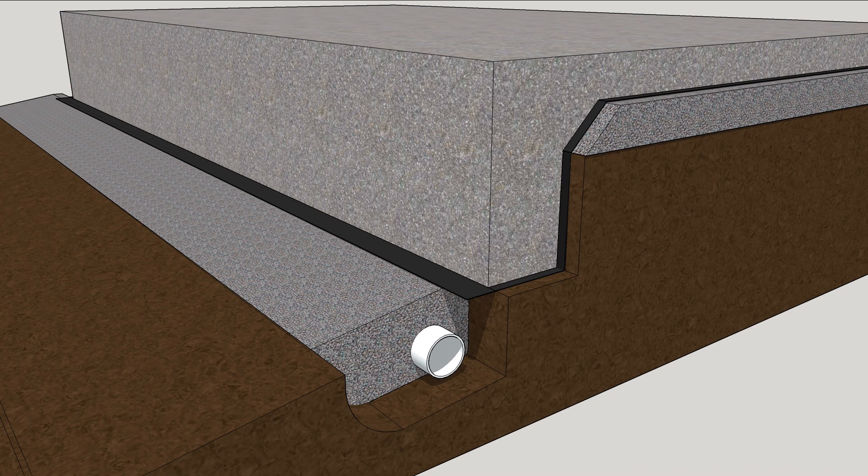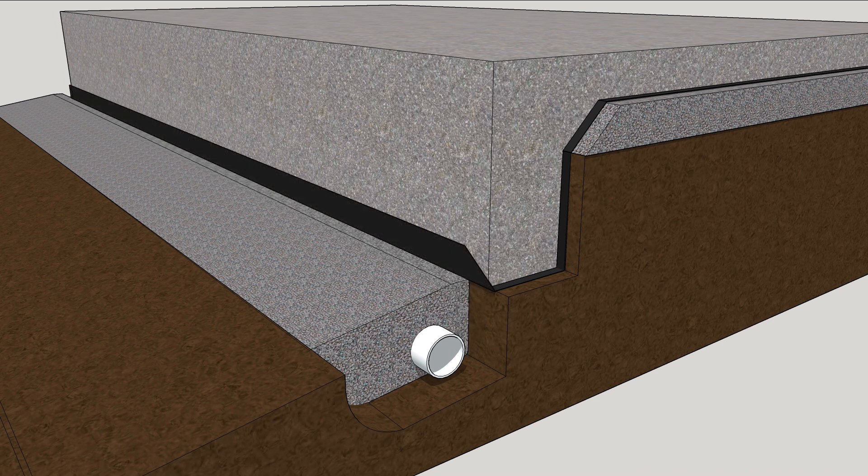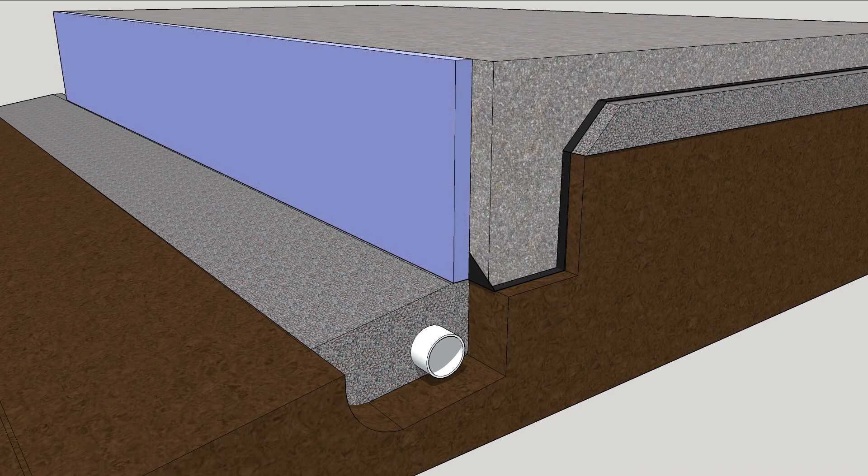Wrap the edge of the plastic up and install rigid foam insulation around the outside edge of the slab.